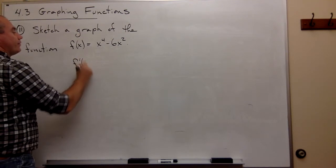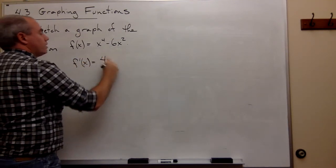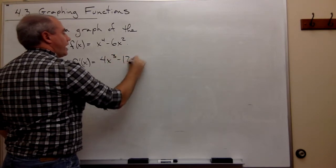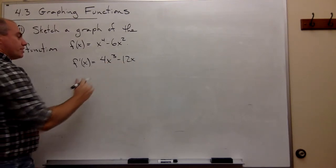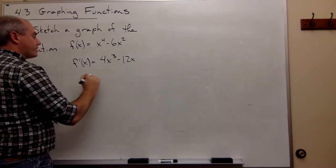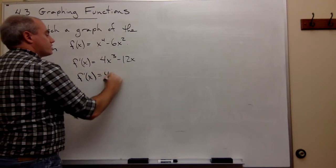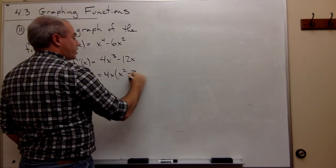The first derivative of this function is going to be 4x cubed minus 12x. Now, we're interested in where this thing is equal to zero, so I can factor out a 4x. So f prime of x is equal to 4x times x squared minus 3.